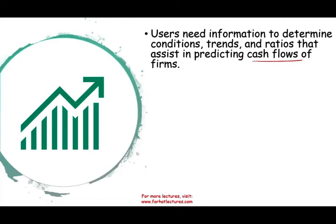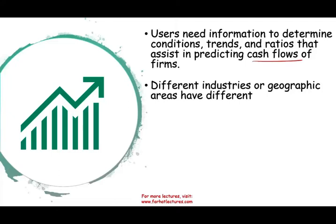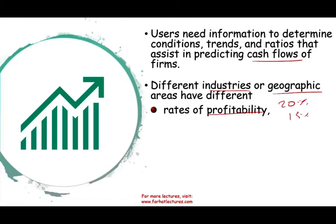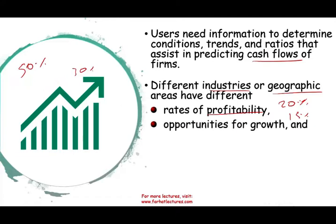I need information about the business — tell me what business you're in so I can evaluate cash flow options and gross profit. Different geographical areas and different industries might have different rates of profitability. For example, you might be earning 20% on beverages in the US, but only 15% in South America. The rate of profitability differs between industries as well as geographical areas — snack profit margin could be 50%, while beverages could be only 30%.